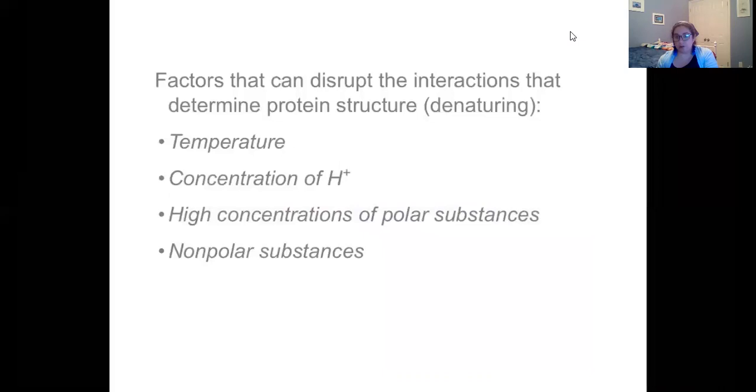Things that can disrupt your functional protein. So things that can denature your protein. Things that can interrupt that quaternary, secondary, and tertiary level of protein folding. Temperature, this is usually going to be too high temperature. Concentration of H+, which is also known as pH. So your concentration of your hydrogen ion, which is that H+, is also known as pH. So you can have a decrease in pH or an increase in pH and that's going to affect your proteins as well. High concentrations of polar substances, because that's going to affect those hydrophobic interactions. And nonpolar substances also, such as either salts or other molecules with those polar versus nonpolar environments, are also going to affect the way that your protein behaves.